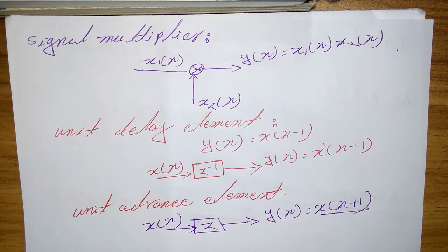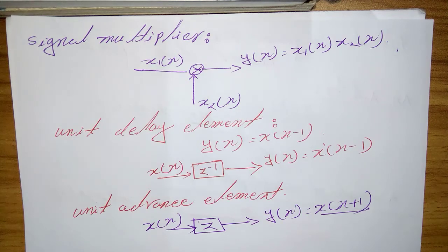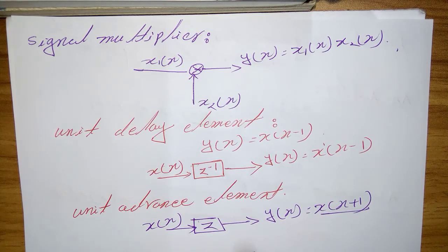We observe that any such advance is physically impossible in real time, since it involves looking into the future of the signal. On the other hand, if we store the signal in the memory of a computer, we can recall any sample at any time. In such non-real-time applications, it is possible to advance the signal x(n) in time.